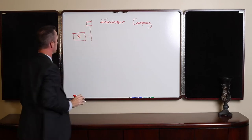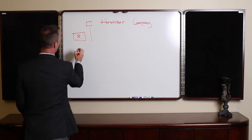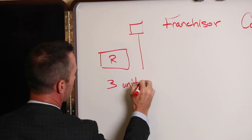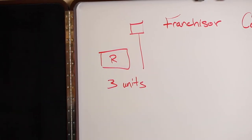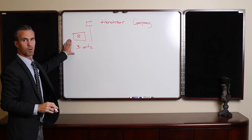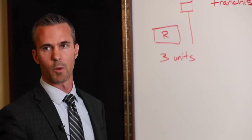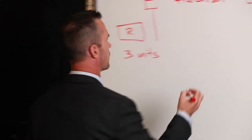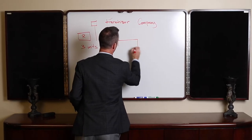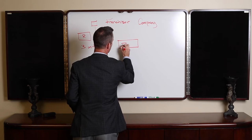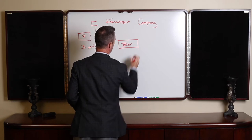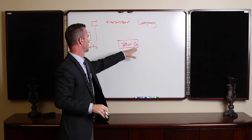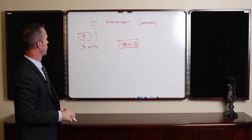You have that either in one company or in three separate companies. What we do is we would set up a brand new company for you. We're going to set up this company here and we're going to name it Zor Co. Basically, Zor is short for franchisor, so Zor Company.